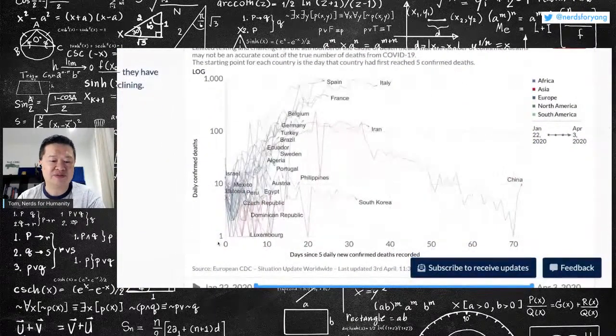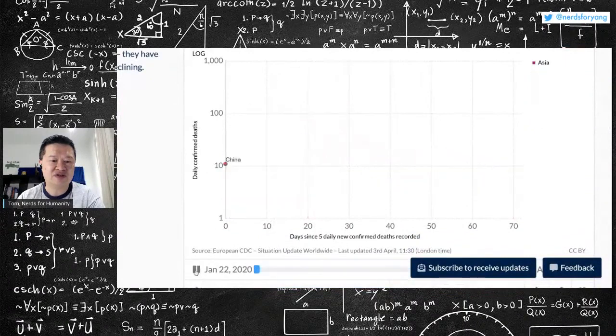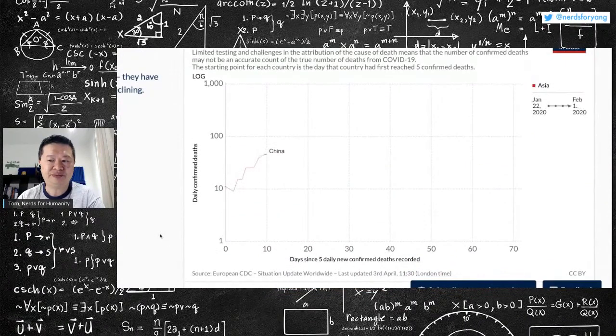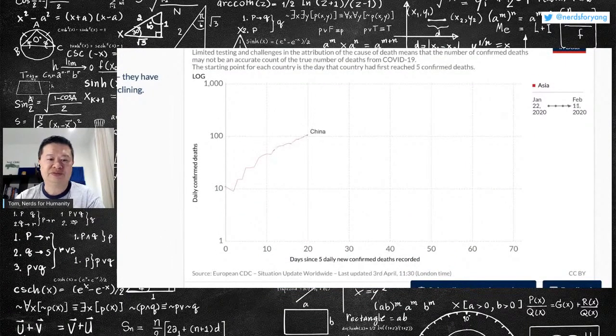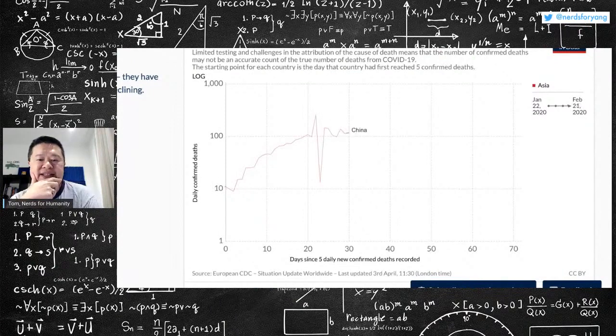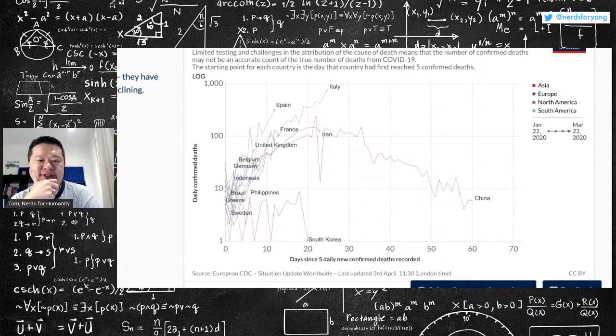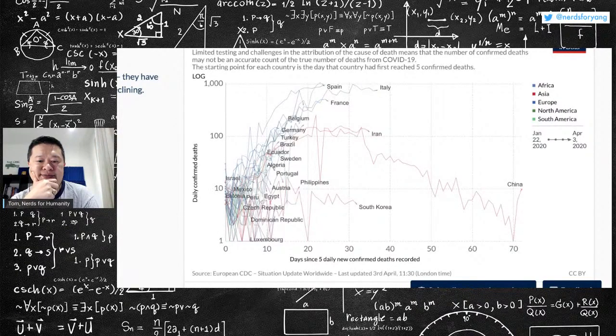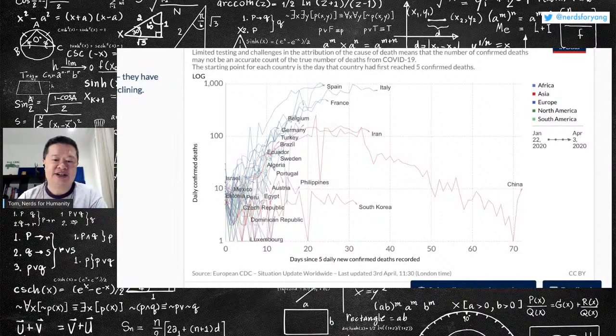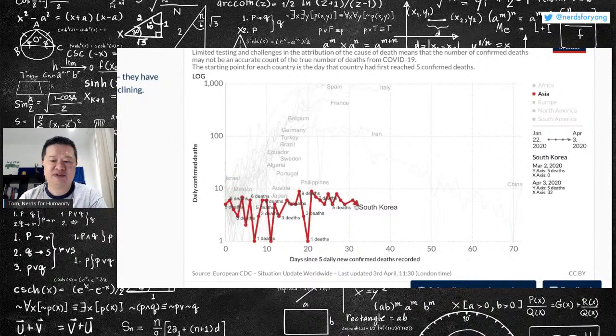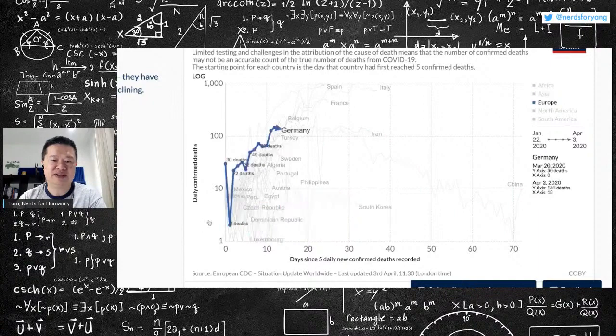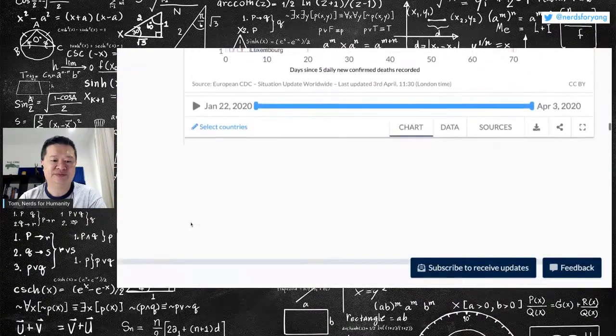So that's that data source. And then this is the number of confirmed deaths over time. Daily deaths in China. And then look at Italy. Jesus. South Korea seems like it's doing a little better.